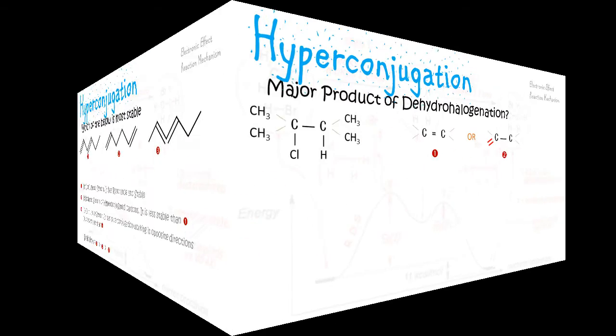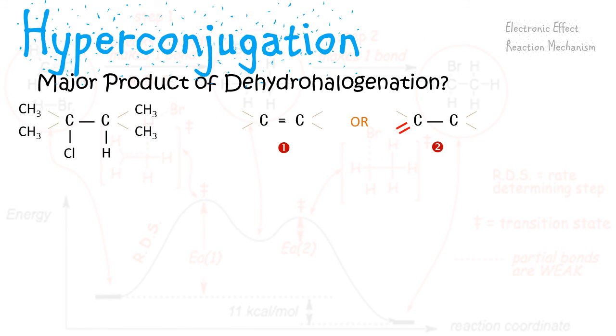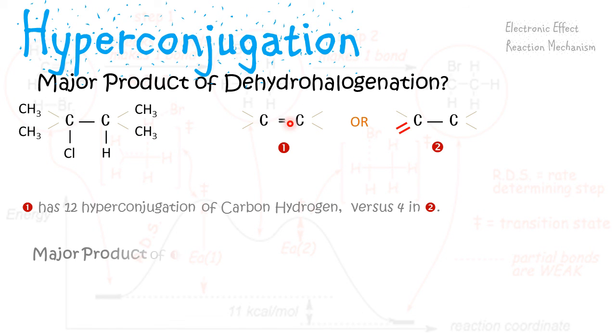Here we see that this particular carbon has 12 hydrogen atoms in hyperconjugation, whereas here there are only four. And therefore one is more stable than two, and therefore more of one will be seen as a product than two.